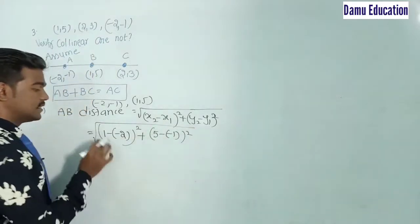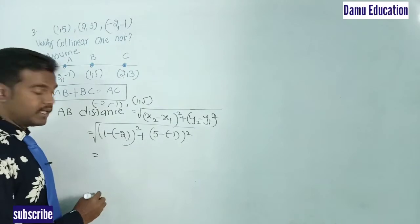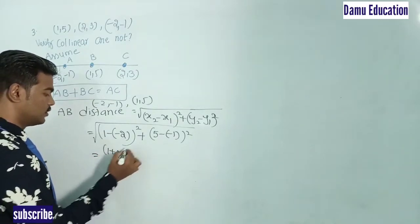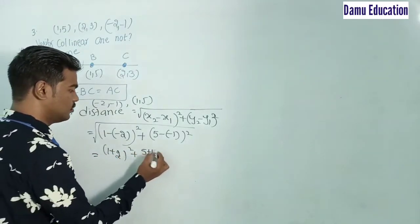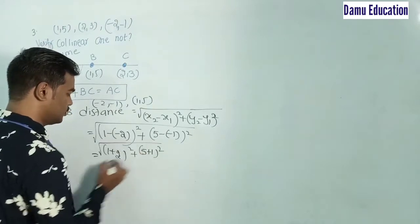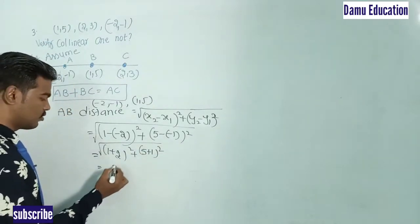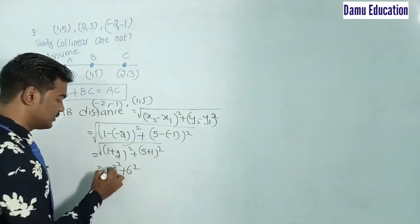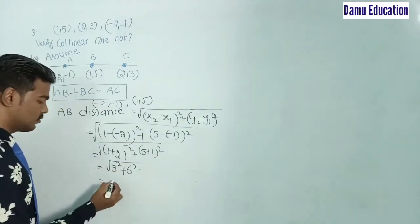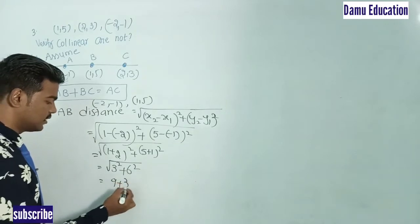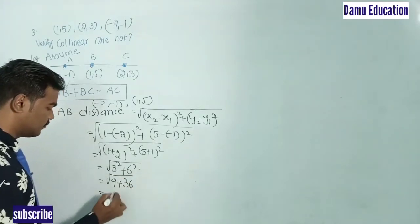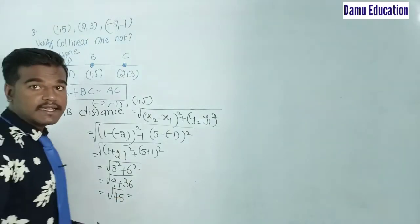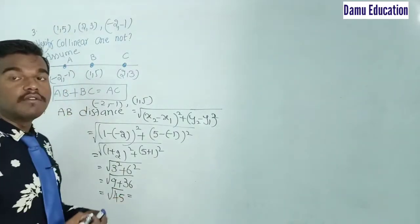So 1 minus (−2) becomes 1 + 2 = 3, and 5 minus (−1) becomes 5 + 1 = 6. Therefore AB = √(3² + 6²) = √(9 + 36) = √45.